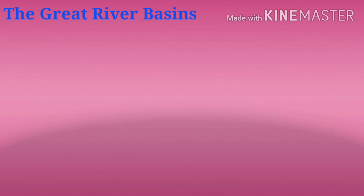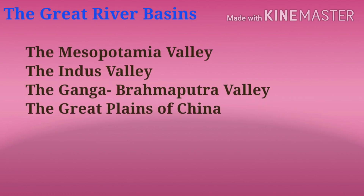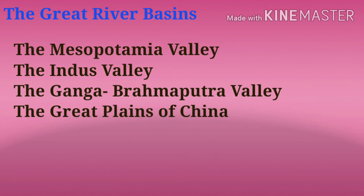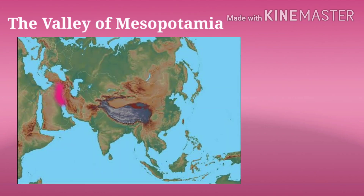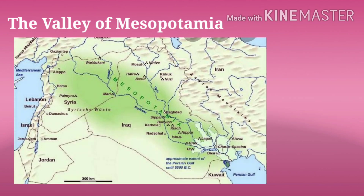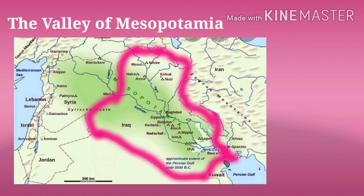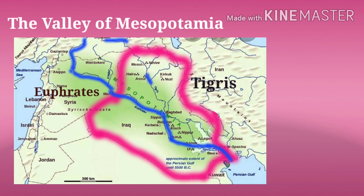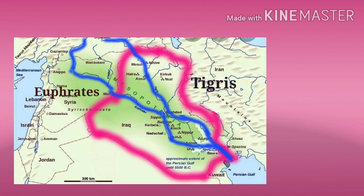The major river basins of Asia are the valley of Mesopotamia, or the Mesopotamian Plains. The word Mesopotamia means 'between the rivers' in the Greek language. These plains are located in Iraq and formed by the rivers Euphrates and Tigris that flow into the Persian Gulf.